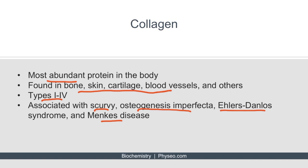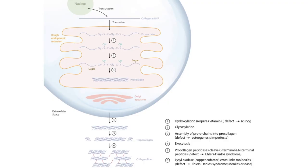These disorders can best be understood by looking at collagen synthesis. This is an overview figure of collagen synthesis, which can be found in section 3 of cellular biology. Collagen is synthesized by chondroblasts, osteoblasts, and fibroblasts. Collagen synthesis is a multi-step process that starts in the nucleus and doesn't end until after it has been released into the extracellular space.